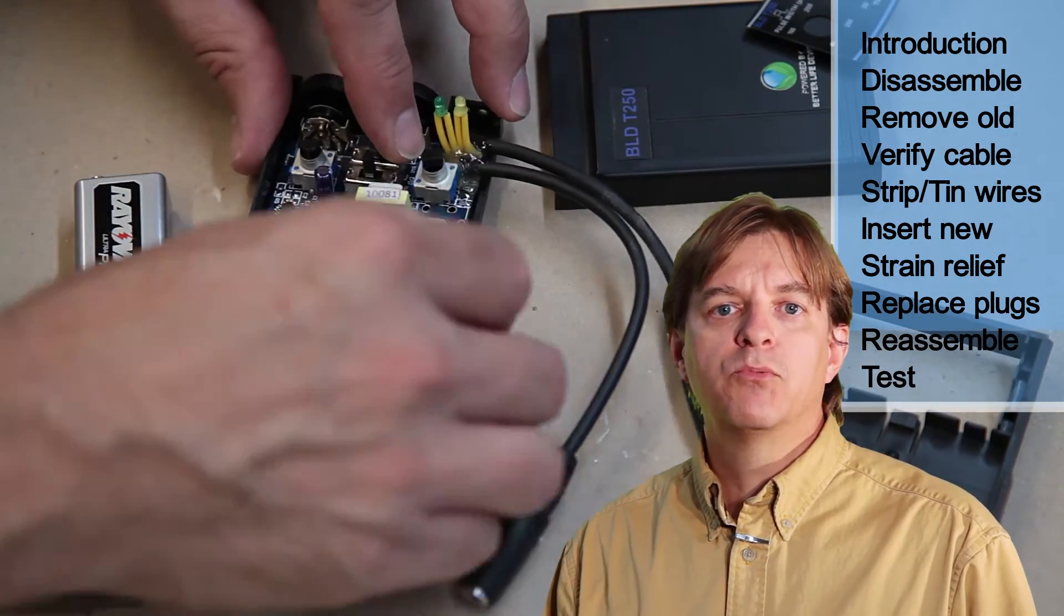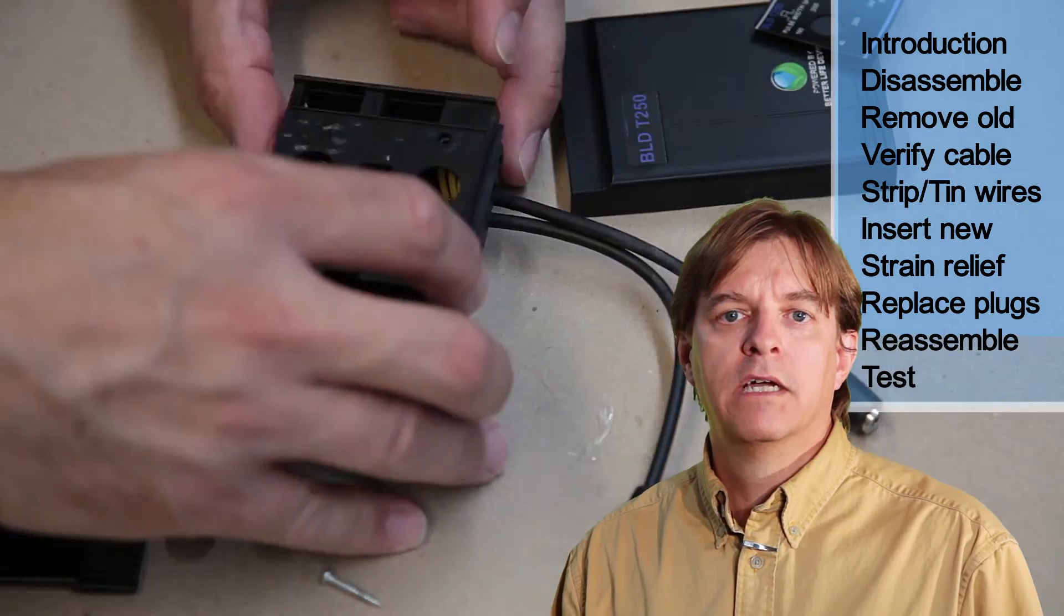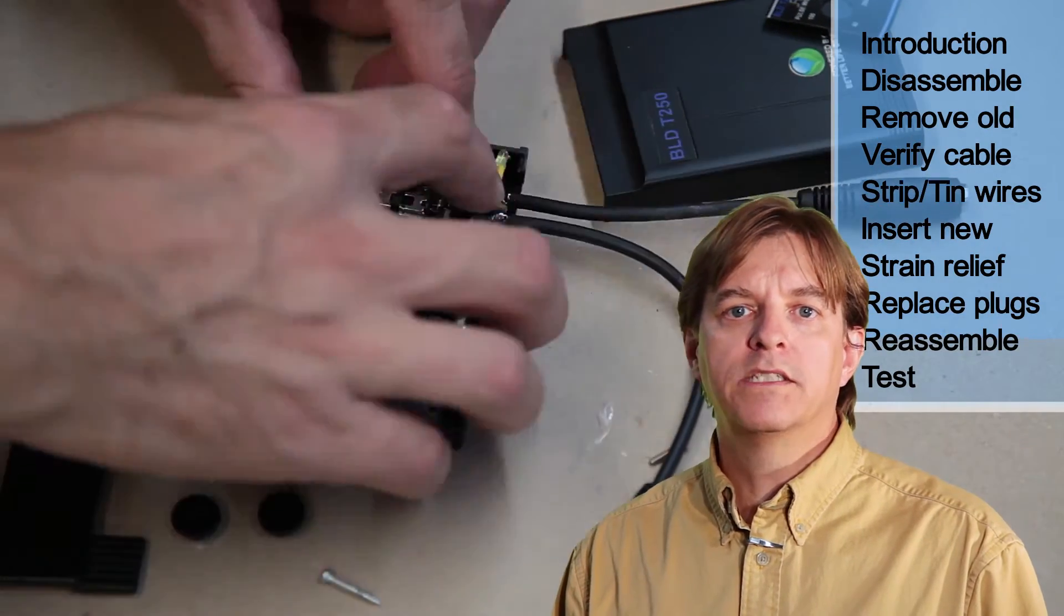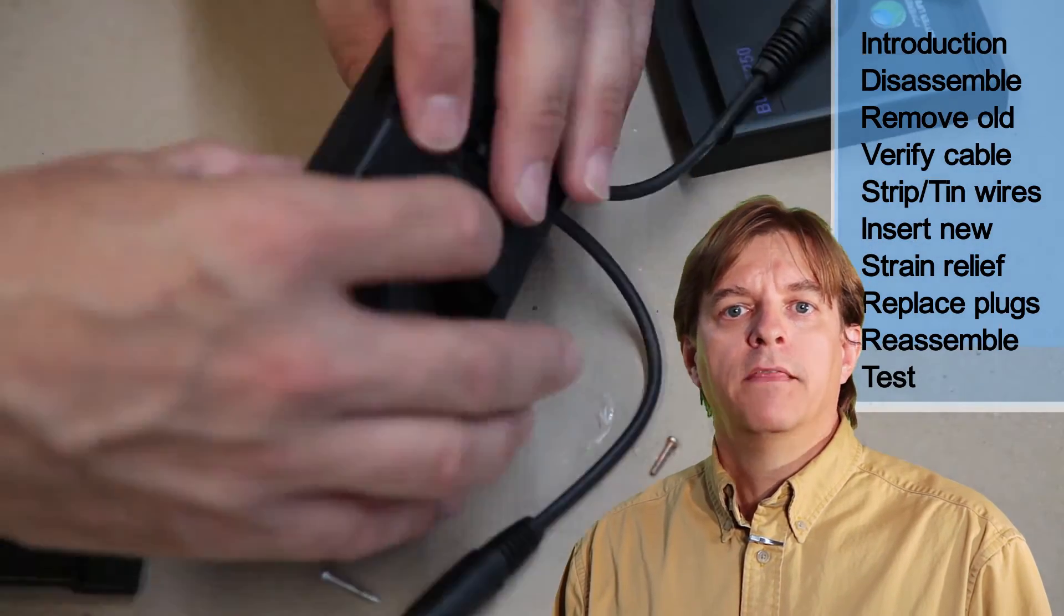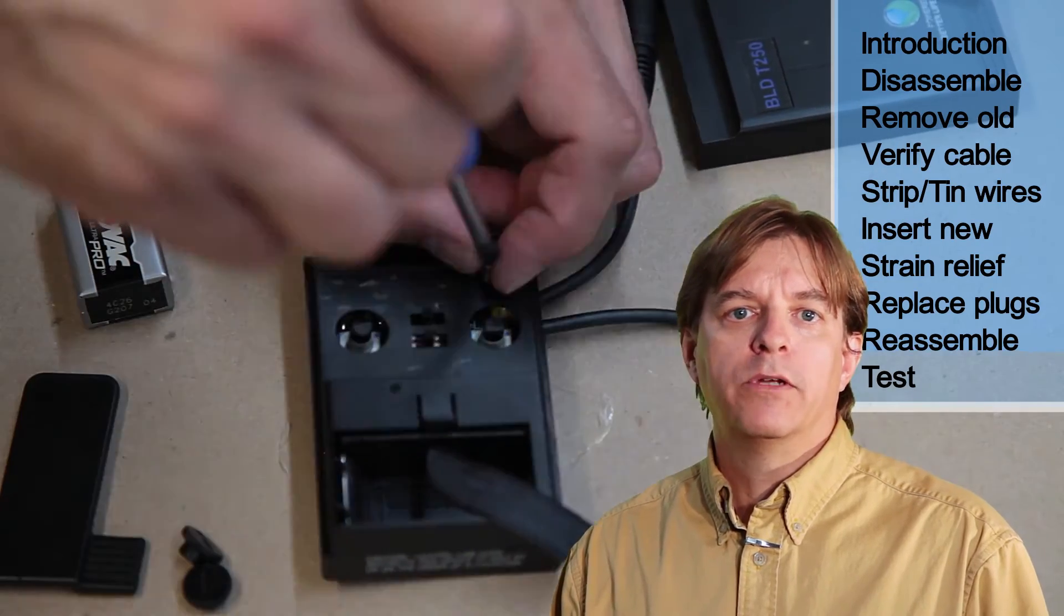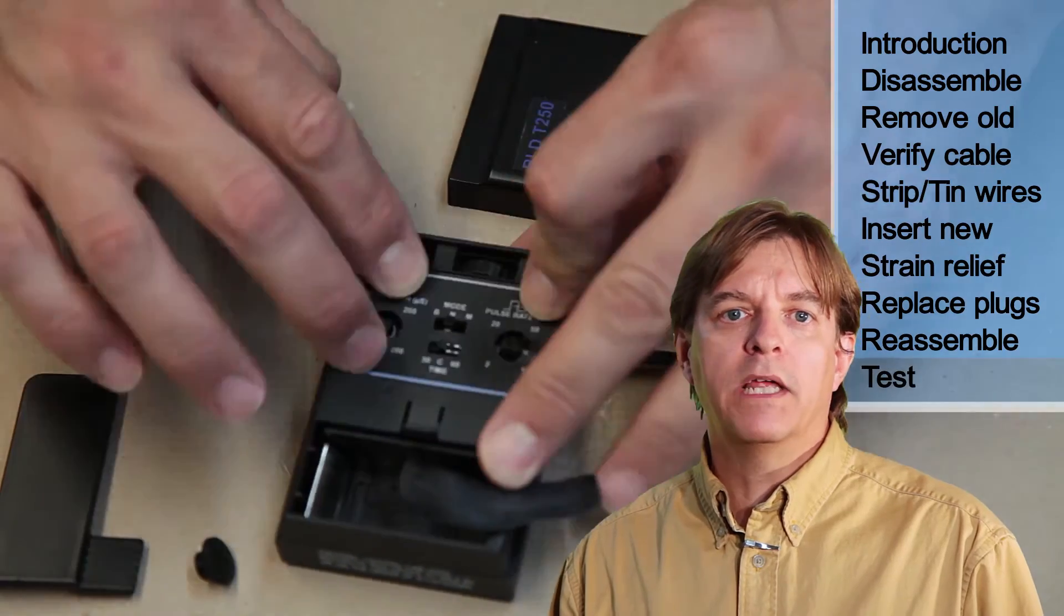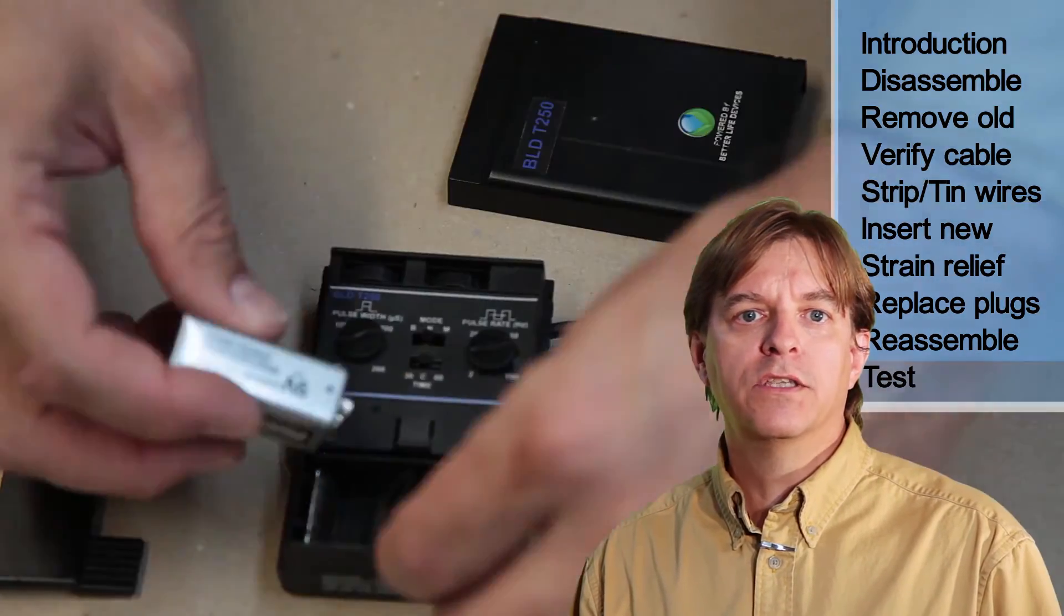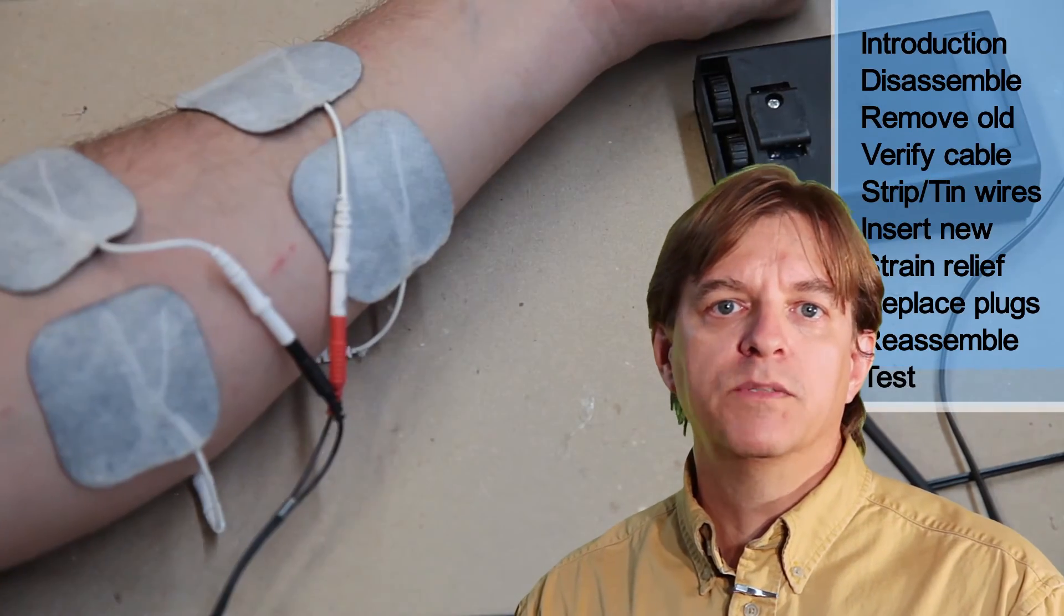And now it's time to reassemble the device. This is just the opposite of taking apart. Drop the circuit board into one side of the box, sliding the battery connections into place. The other side goes back on top with the new connectors coming out of the original holes. The screws go back in. The label is replaced and the knobs slide back onto the controls. Finally, the battery can be placed in. Before the clip goes back on, I'm going to test it.